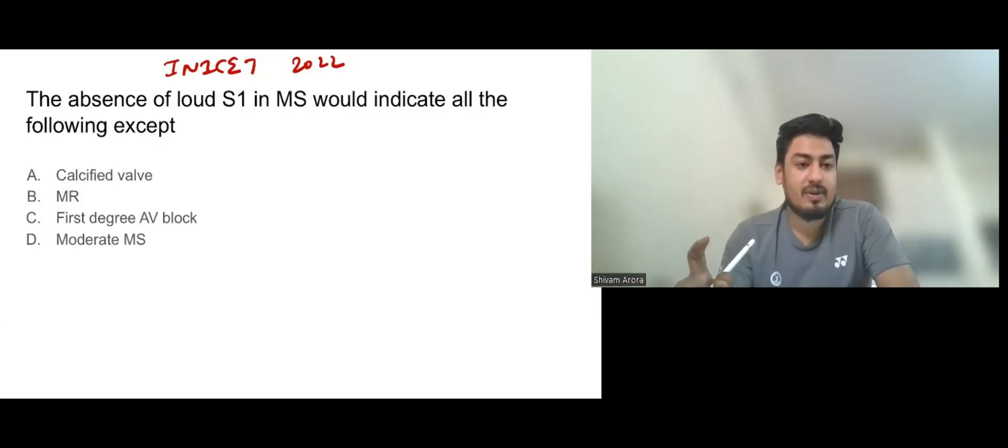First of all, as we all know that MS has loud S1. But why? Because in mitral stenosis, there is narrowing, so LA pressure will increase. Now when the mitral valve closes, when LV pressure rises more than the LA pressure. So now the LA pressure has increased, so more pressure in LV is required to close the mitral valve. So now the mitral valve closes against more pressure, so S1 would be loud. So S1 is loud in MS.